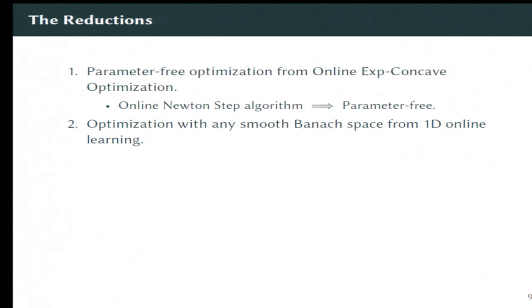Which is that we can actually take any one-dimensional online linear optimization algorithm and turn it into an optimization algorithm that's dimension-free in any Banach space with a smooth norm. And this reduction is fast. It runs in the same runtime as gradient descent. This is what's going to enable us to, combining these is going to enable us to solve the Banach space problem we're looking at.